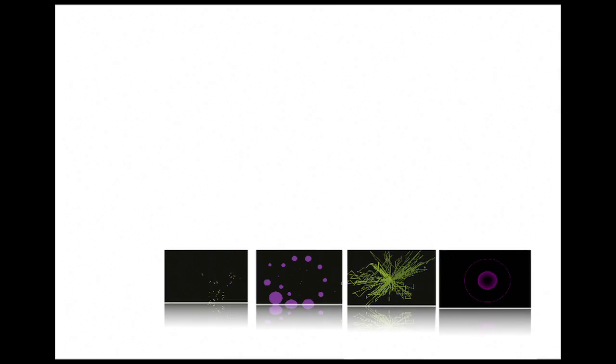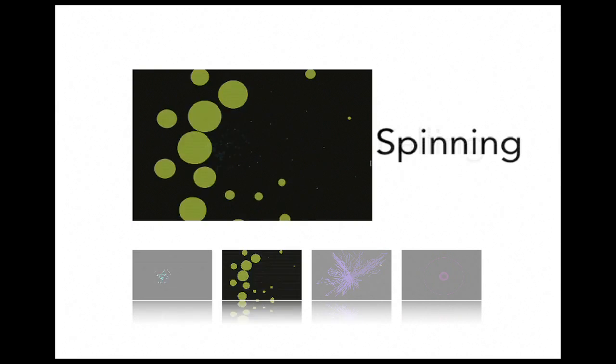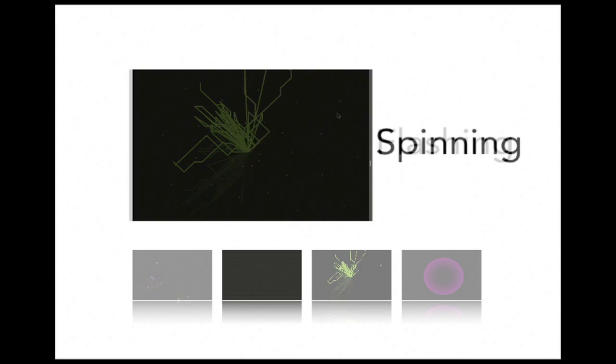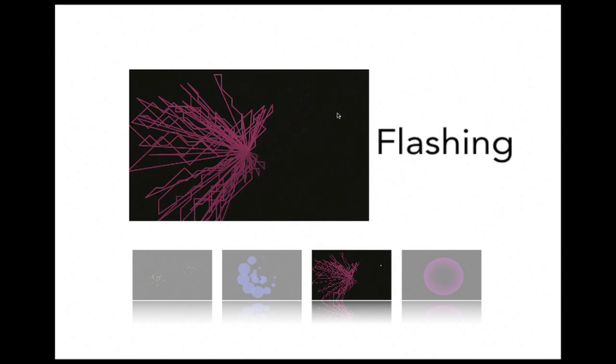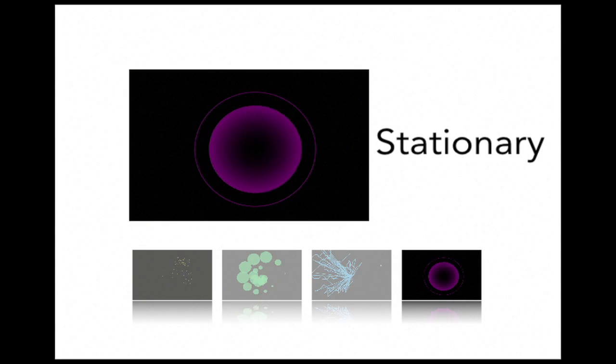These objects can be presented in one of four types of motion metaphors. Falling Objects move downward as if drawn by gravity. Spinning Objects move in a circular or spiral pattern. Flashing Objects appear and disappear quickly. And stationary Objects stay in a fixed location.